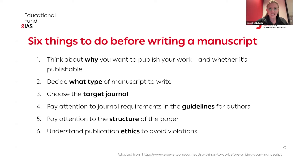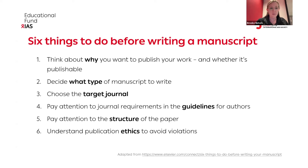There are six things you want to start thinking about before you actually start writing your manuscript. First, why you want to publish your work and whether it's going to be publishable. Then, figure out what kind of manuscript you want to write — is it a research scientific manuscript, a comment? There are different types. Then choose the target journal and make sure you're writing for that journal's audience. Pay attention to journal requirements and guidelines for authors — editors really appreciate this. Finally, understand the publication ethics to avoid violations.